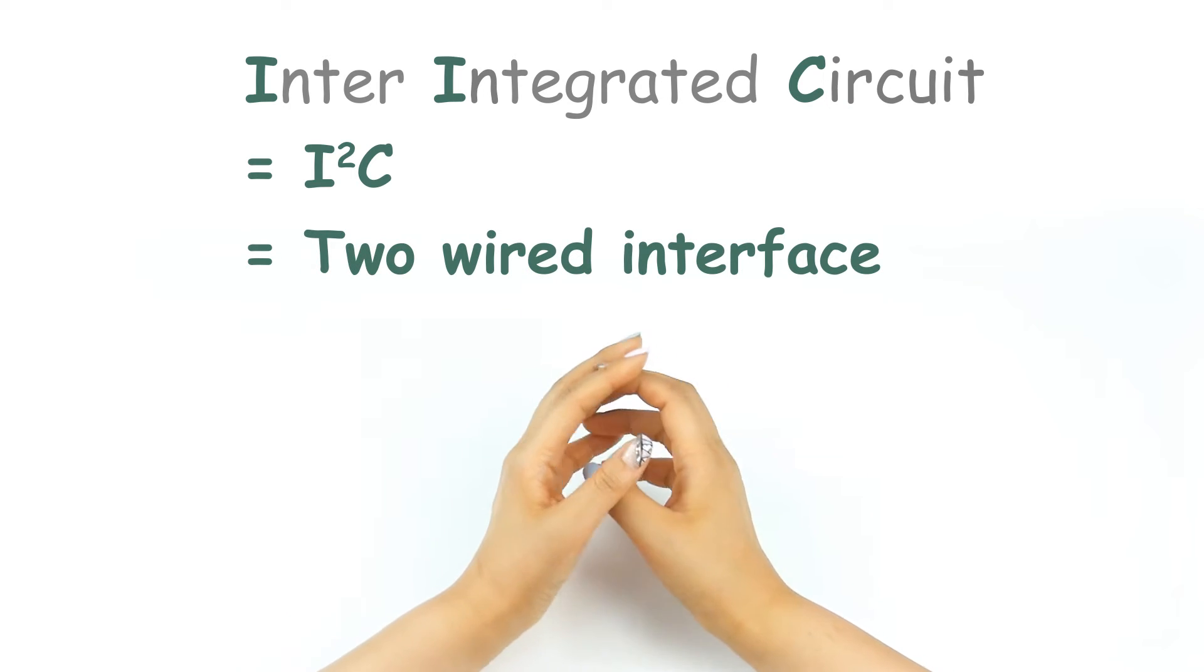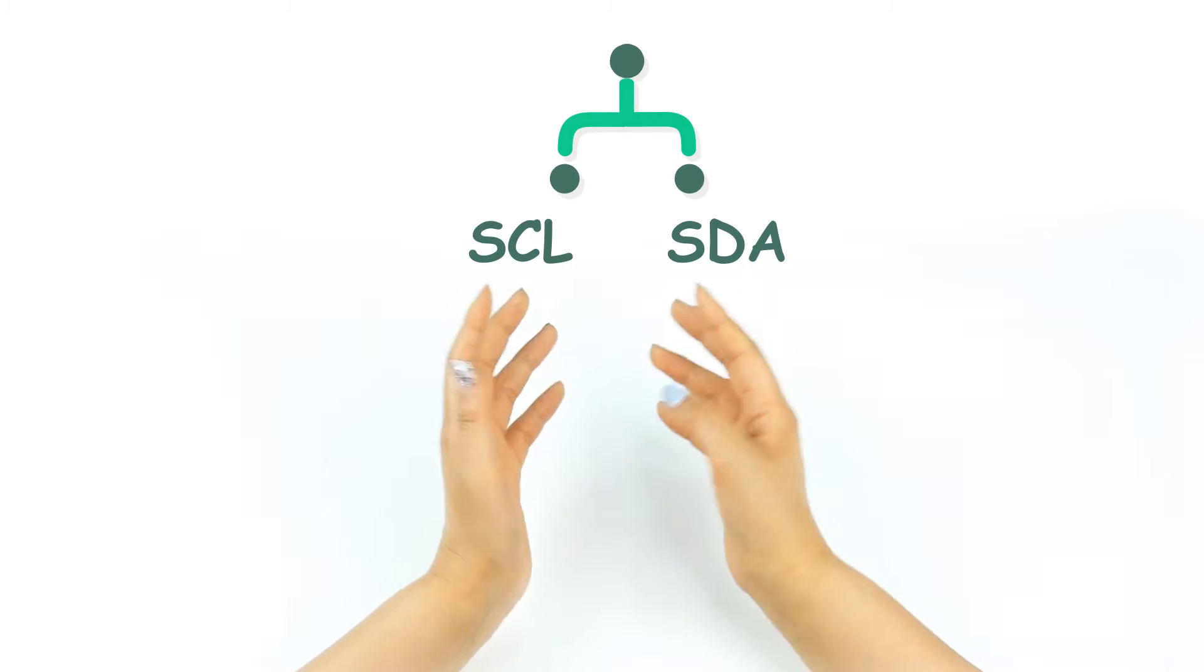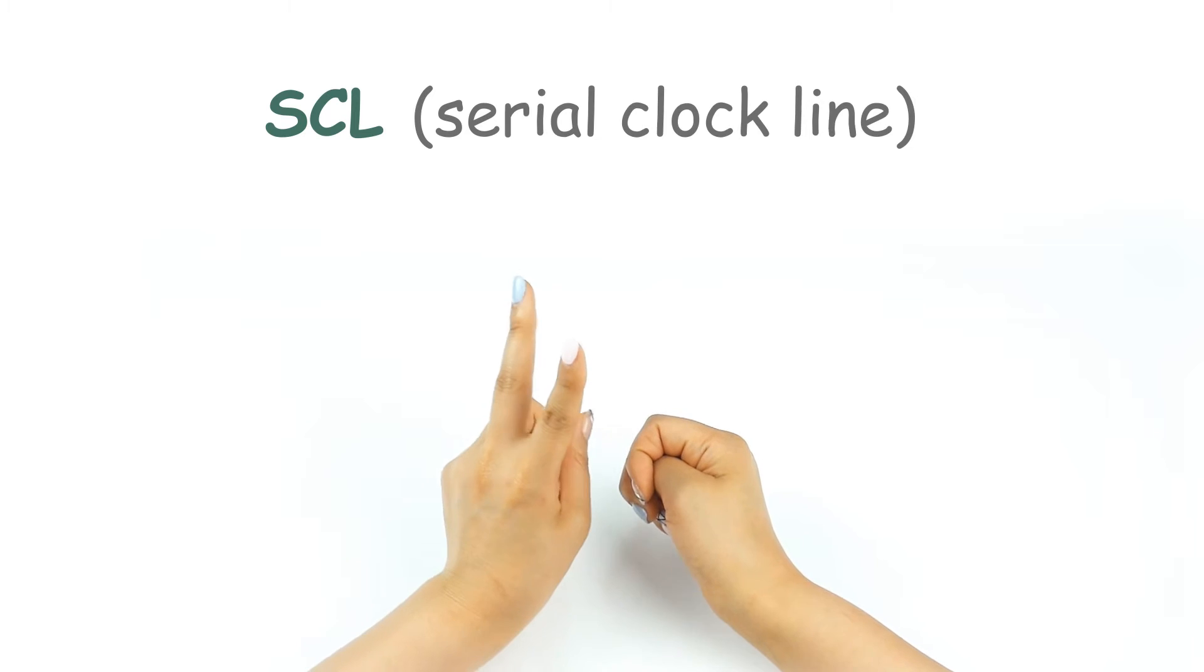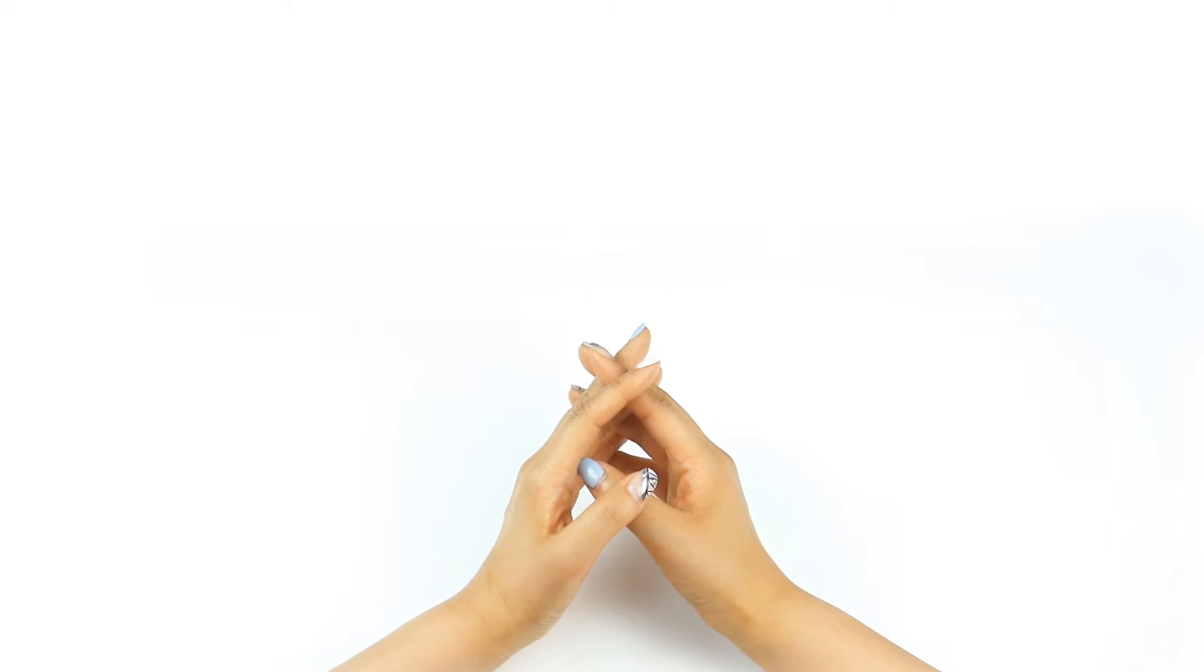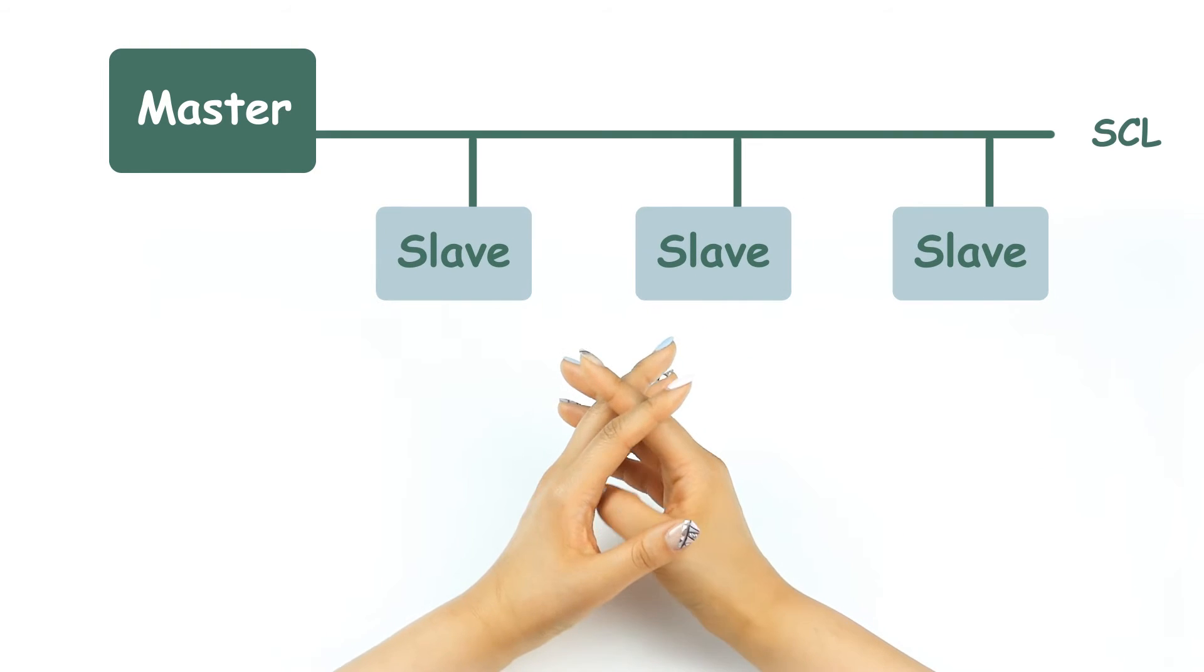So the connections are fairly simple. It's called two-wired interface because the connection needs two data lines: one serial clock line and serial data line. One master and one or more slaves are all connected to the two lines.